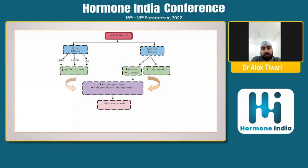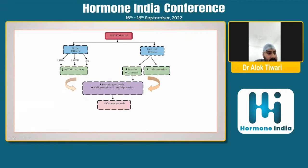With metformin, through the LKB1-AMPK-P53 pathway, metformin directly decreases the mTOR pathway. By depressing the mTOR pathway, it depresses protein synthesis and decreases cell growth and multiplication, thereby decreasing cancer growth.